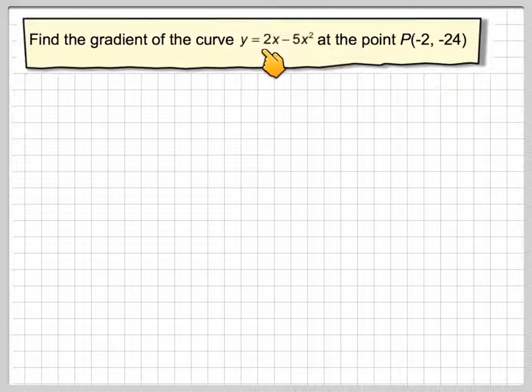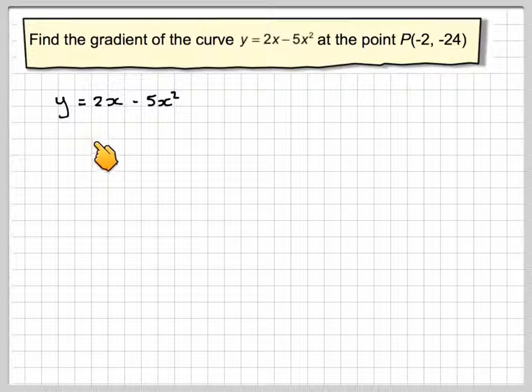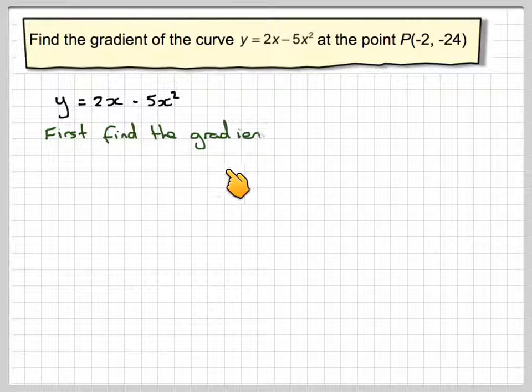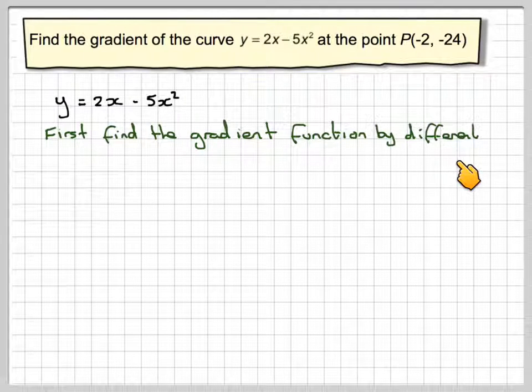Find the gradient of the curve y equals 2x minus 5x squared at the point P(-2, -24). So we've got y equals 2x minus 5x squared. First we need to find the gradient function, and we find the gradient function by differentiation.